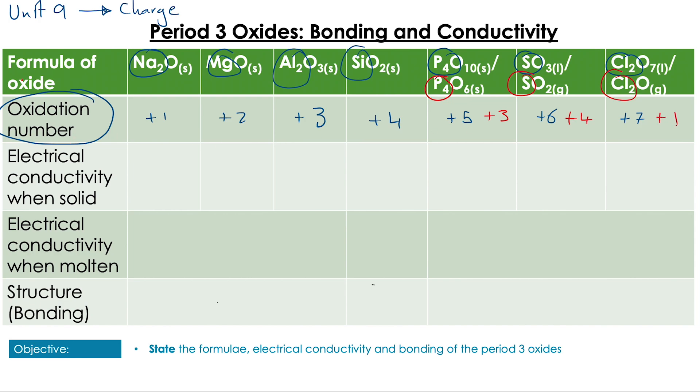We know from Unit 4 that the bonding of these oxides on the left side of the periodic table is ionic bonding. On the right side of the periodic table, when it's covalent-to-covalent, we're going to have molecular covalent compounds. Silicon forms a giant covalent compound, which we also looked at in Unit 4.